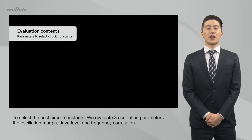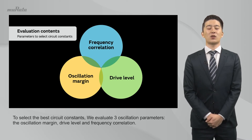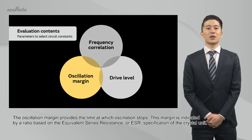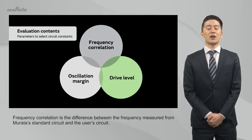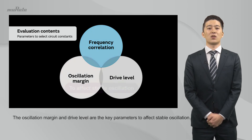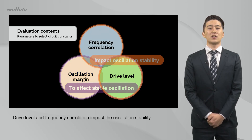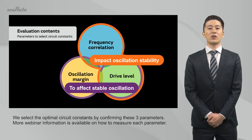To select the best circuit constants, we evaluate three oscillation parameters: the oscillation margin, drive level, and frequency correlation. The oscillation margin provides the limit at which oscillation stops. This margin is indicated by a ratio based on the equivalent series resistance, or ESR, specification of the crystal unit. Drive level indicates the power consumption of the crystal unit while oscillation is underway. Frequency correlation is the difference between the frequency measured from Murata's standard circuit and the user's circuit. The oscillation margin and the drive level are the key parameters to affect stable oscillation. Drive level and frequency correlation impact the oscillation stability. We select the optimal circuit constants by confirming these three parameters.